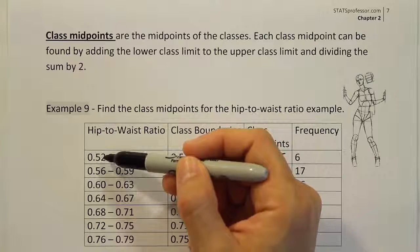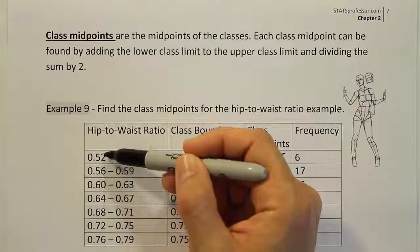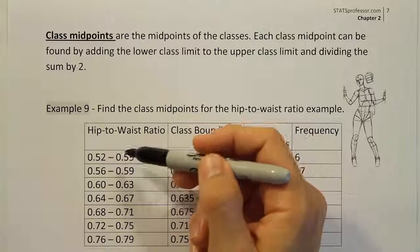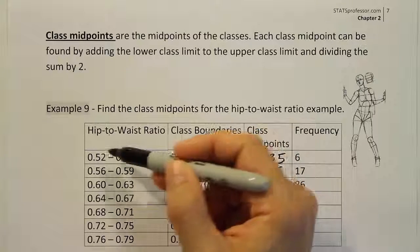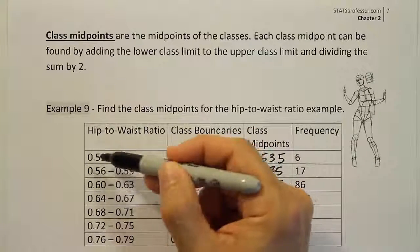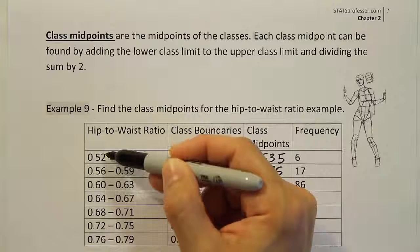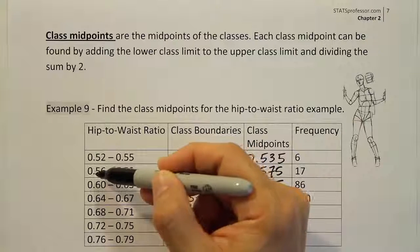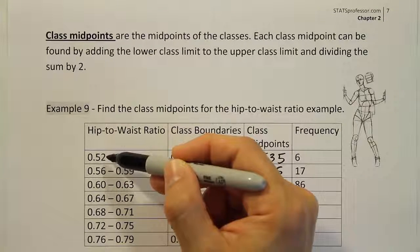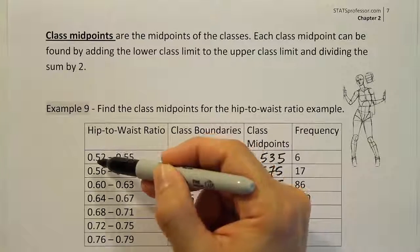So the class width is the difference between any two consecutive lower class limits or any two consecutive upper class limits. So consecutive means one after the other. And if you take the difference between two lower class limits like that, if we were to subtract .56 and .52, the difference between those is .04.